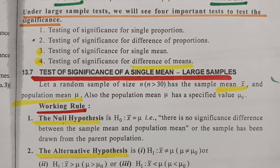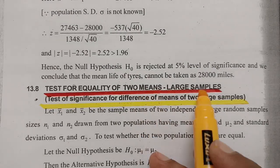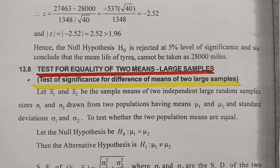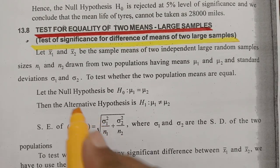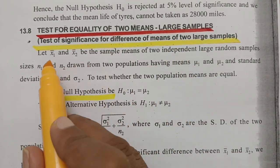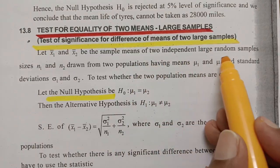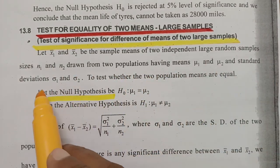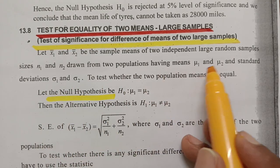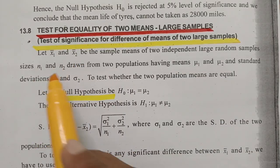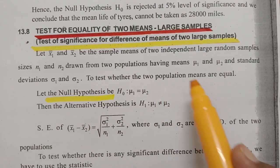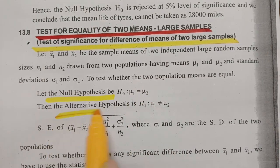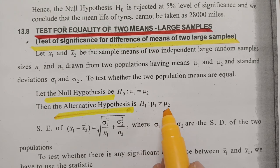The working rule for testing of the equality of the two means for large samples has five steps. The first one is the null hypothesis. Let x̄1 and x̄2 be the sample means of two independent large random samples of sizes n1 and n2, drawn from two populations having means μ1 and μ2 and standard deviations σ1 and σ2. To test whether the two population means are equal, the null hypothesis is H0: μ1 = μ2. In the alternate hypothesis, we choose μ1 ≠ μ2.